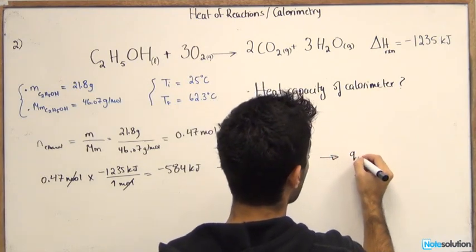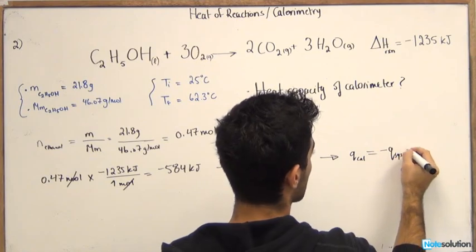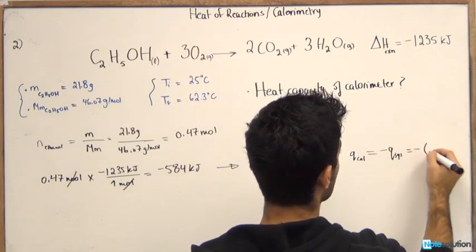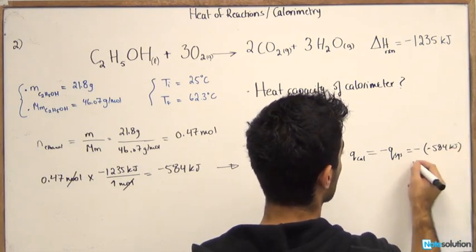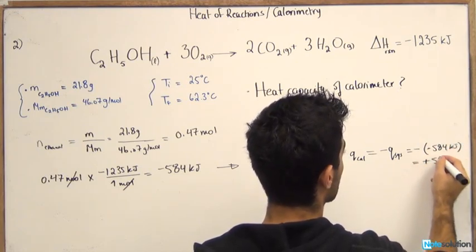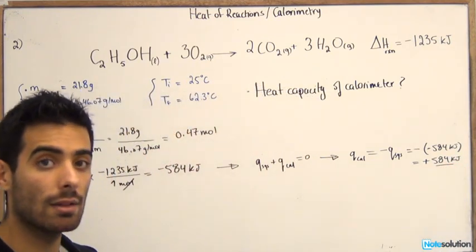So Q cal will be equal to negative Q of the system, which equals negative and then negative 584. That would give you positive 584 kilojoules. So now we know the Q cal.